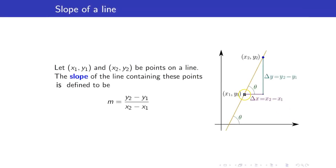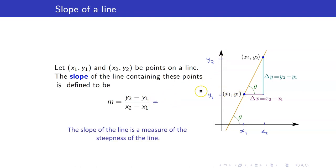Suppose that we have two points, x1, y1, and x2, y2. The slope of the line containing these points is defined to be y2 minus y1, this distance, all over x2 minus x1. This y2 minus y1 we call the rise, and we call the difference x2 minus x1 the run.